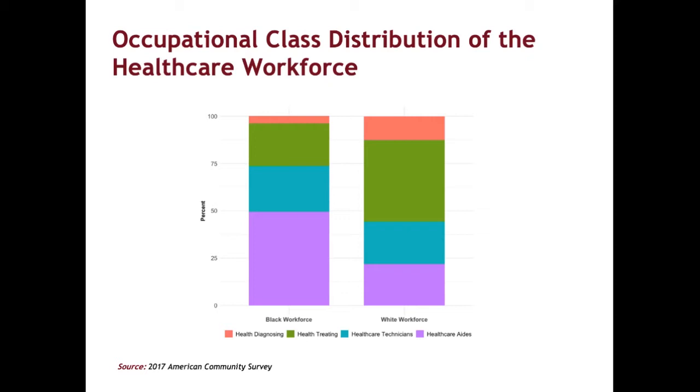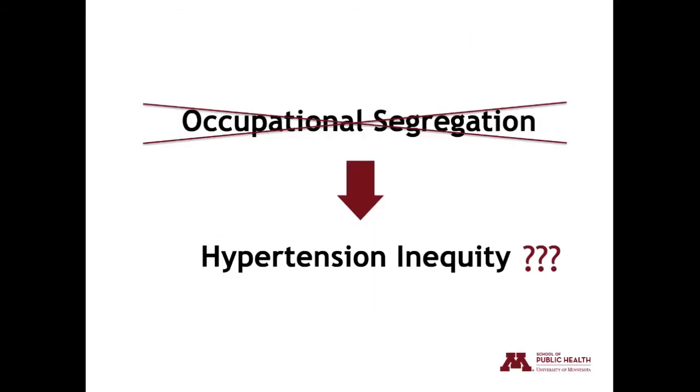The implication of this is that Black healthcare workers are systematically facing higher occupational health risks than White workers. Our study asked what would happen to the racial inequity in hypertension if the ability to access jobs in all occupational classes and occupational advantages for Black workers were similar to those afforded to White healthcare workers.